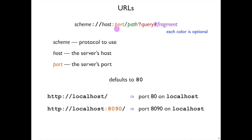The parts shown in color up here are all optional. The port is optional — it defaults to port 80, as we said. So if you say localhost with no colon anything, that means port 80 on localhost. Localhost colon 8090 is port 8090 on localhost.